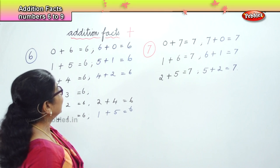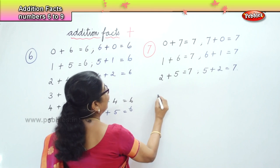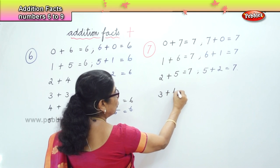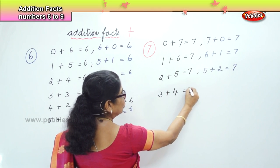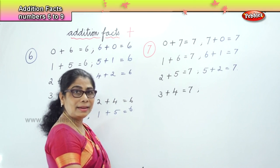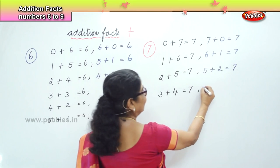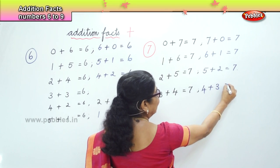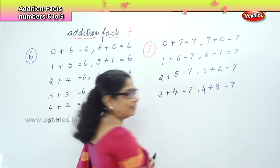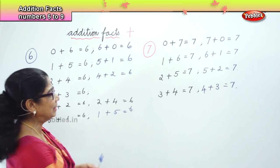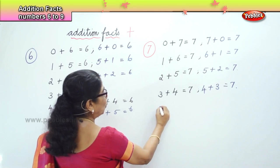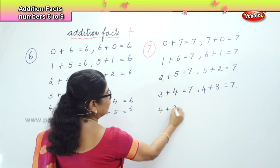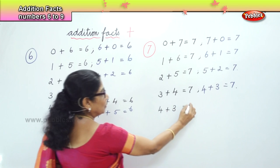What is the next number combination in addition facts of 7? 3 plus 4 is equal to 7. And the reverse: 4 plus 3 equal to 7. After 3 comes 4: 4 plus 3 is equal to 7.